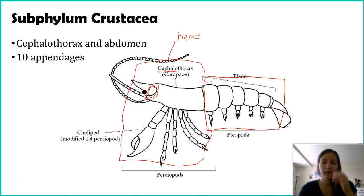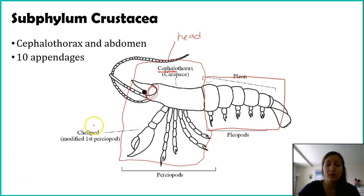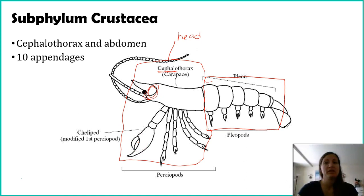Compared to hexapods with their six legs and millipedes and centipedes with many more, crustaceans have 10 appendages. Now some of them might be modified — you can see with this crayfish these are duplicated on the other side of the body, giving it eight typical appendages. And then they do have some modified appendages — in the case of this crayfish, pincers for eating and defense — but 10 appendages nonetheless.